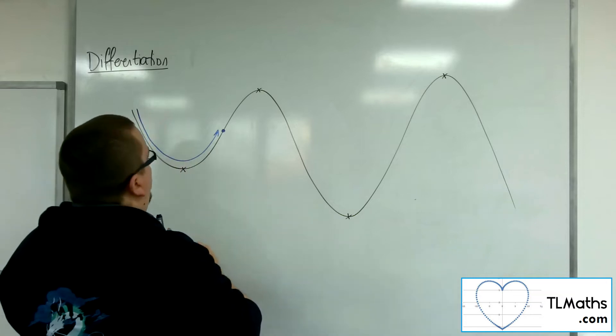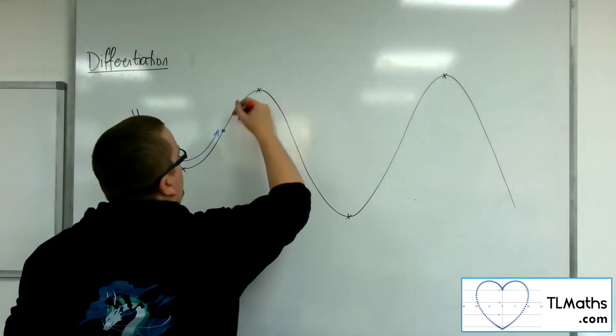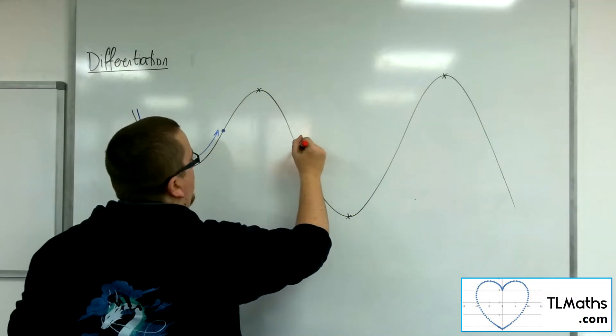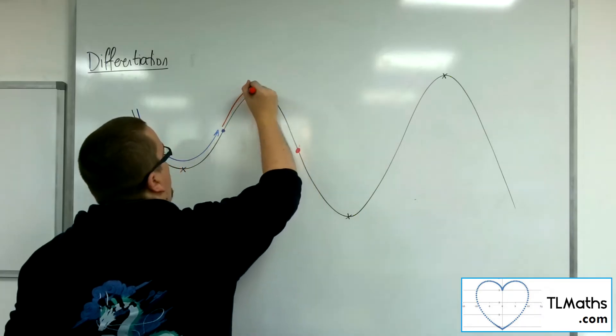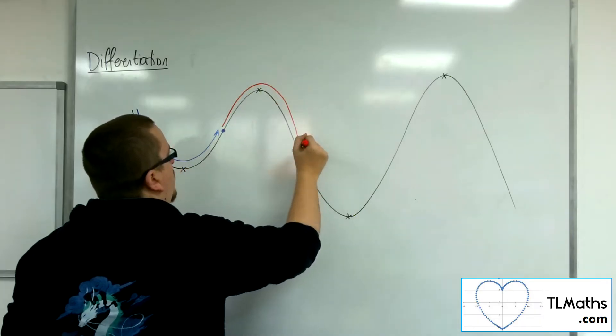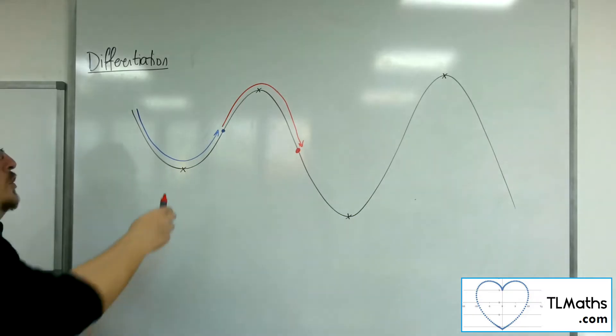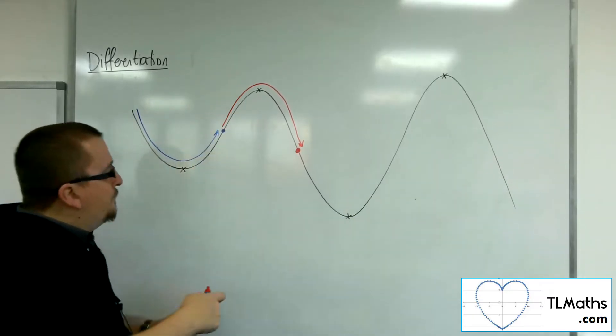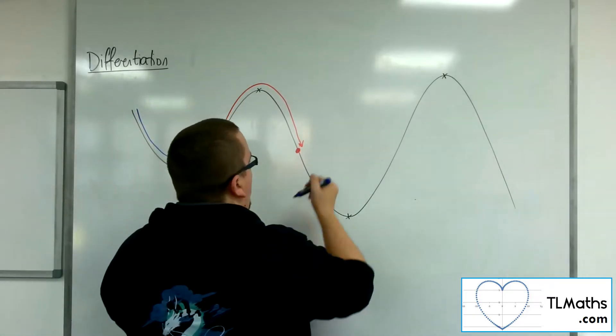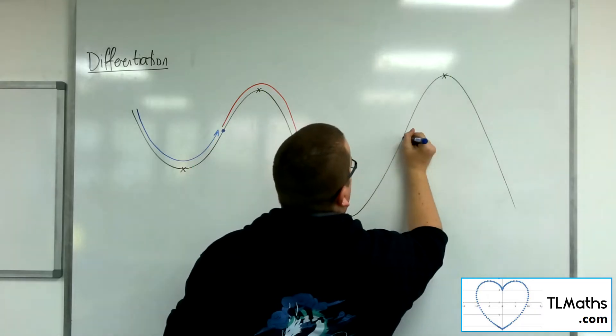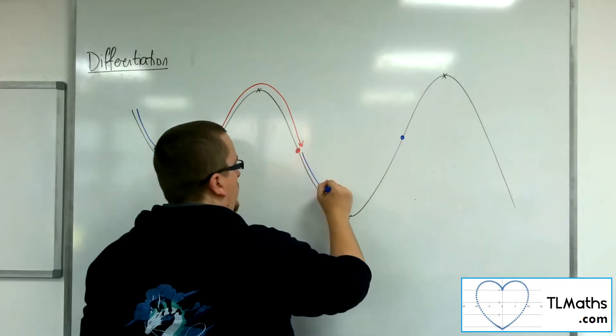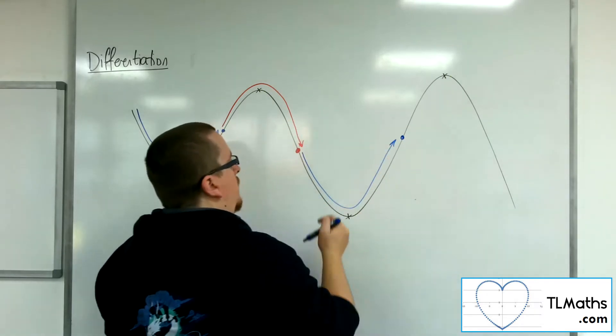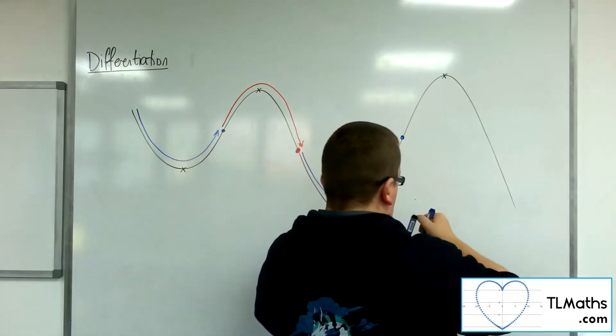Then I hit this next point somewhere around about here maybe, where I'm now going around in this direction. So going in a clockwise direction. I then keep going around, and I'm going to hit another point somewhere maybe up here. I'm going in this anti-clockwise.